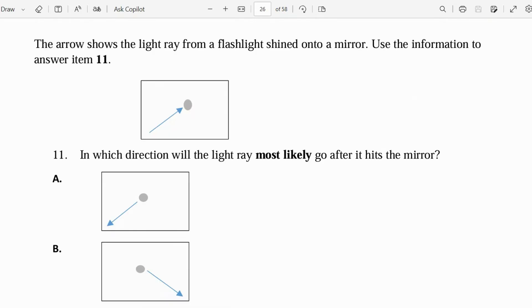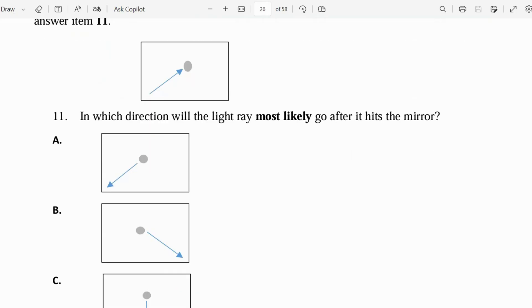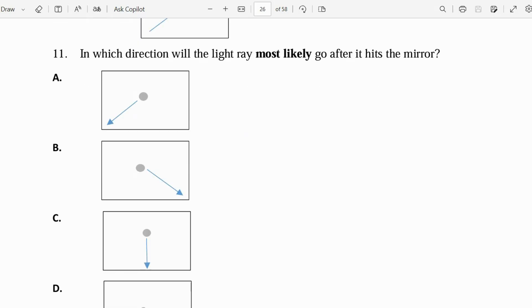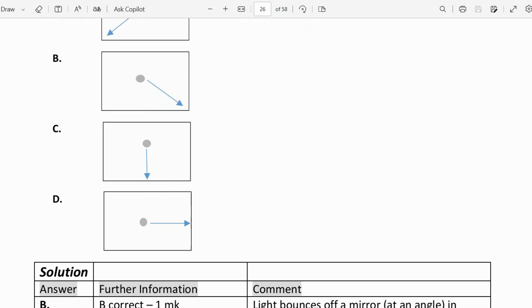Let's move on to the next question. The arrow shows the light ray from a flashlight shined onto a mirror. Use the information to answer item 11. In which direction will the light rays most likely go after it hits the mirror? So let's look at the mirror and the light rays. The light rays going upwards towards the mirror. And if it's reflected, what direction would the light ray go into? Let's look at the others. The answer is B.